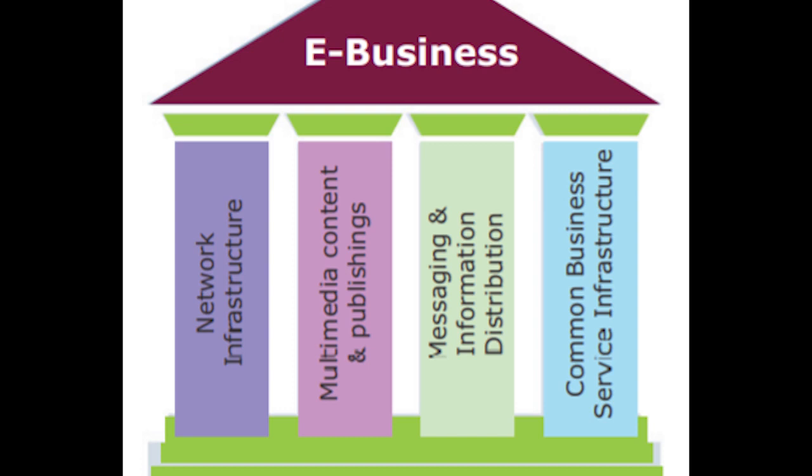For network publishing infrastructure, we need a web page, and to create a web page we need HTML. For online marketing, messaging, and information distribution, infrastructures like email, HTTP, computerized inventory management systems, and EDI are used. Common business service infrastructures include electronic payment gateways and globalized supply chain management. A company is said to have e-business if it has the ability to conduct business electronically over the internet.